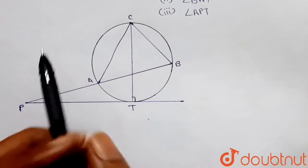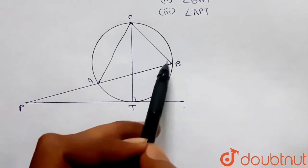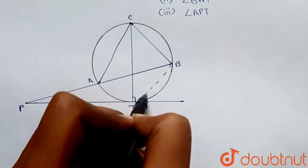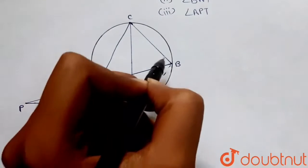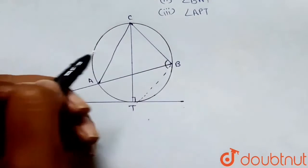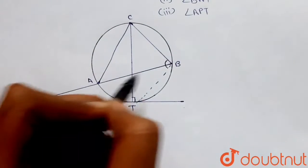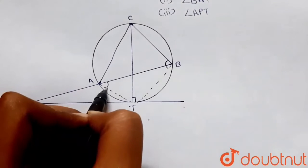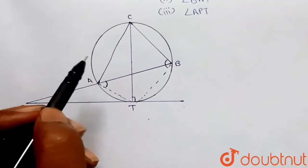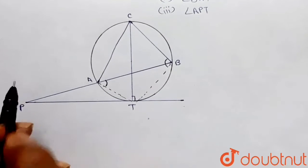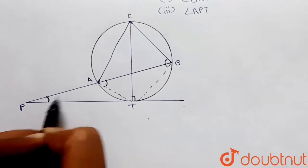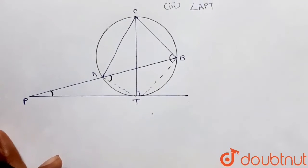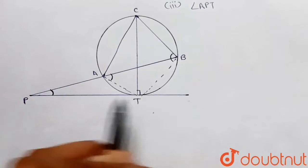We have to find angle CBT, so let me join BT. Then we have to find angle BAT — let me join AT. And then we have to find angle APT. So we have to find these three angles. Let's start.